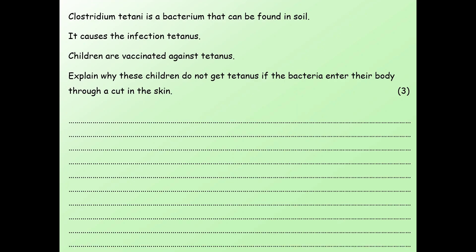So the question is: Clostridium tetani is a bacterium that can be found in soil. It causes an infection called tetanus. Children are vaccinated against tetanus. Explain why these children do not get tetanus if the bacteria enter the body through a cut in the skin.